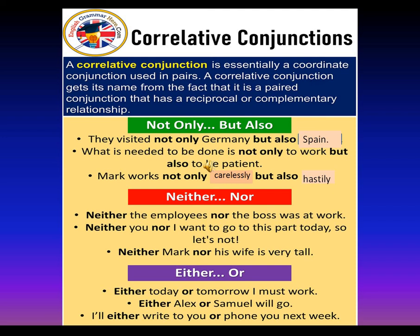The first example is 'not only… but also.' For instance: 'They visited not only Germany but also Spain.' You cannot write 'not only' without 'but also.' Another example: 'What is needed is not only to work but also to be patient.' The next pair is 'neither… nor,' used to express negativity: 'Neither the employees nor the boss was at work.' You can never use 'neither' without 'nor.'